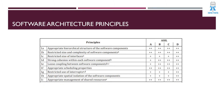Looking at the software architecture principles, there are nine principles available. The first one is that the software architecture design should be in a hierarchical representation — hierarchical structure is mandated as a software architecture principle. It is highly recommended for ASIL B, C, and D. Hierarchy means a granularized, level-wise approach with a representation of flow between them.